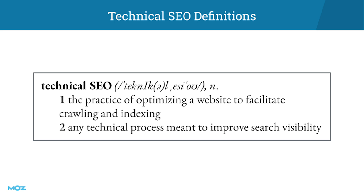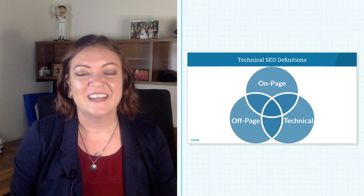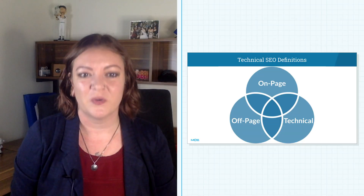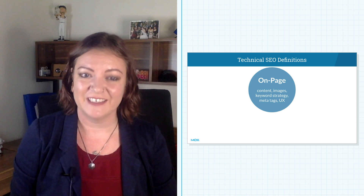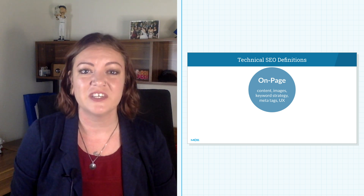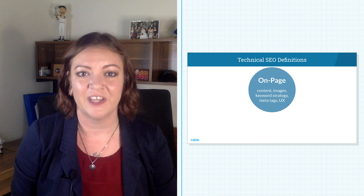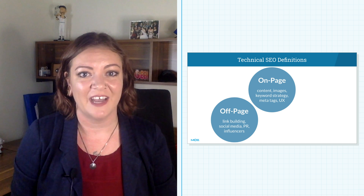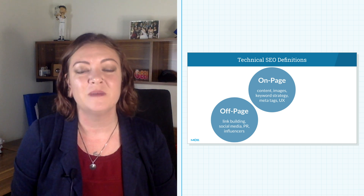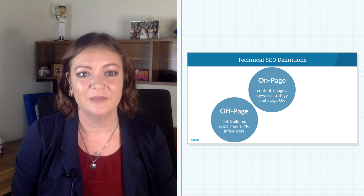Technical SEO involves using technical processes to help Google place you more prominently in relevant SERPs, which leads to more and better qualified customers finding and using your site. Technical strategies work hand in hand with on-page tactics like the creation of content that's optimized for your target keywords, and off-page tactics which help to amplify the content you've created.